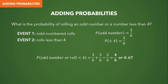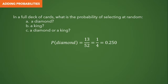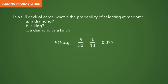Let's try this example. In a full deck of cards, what is the probability of selecting: A) a diamond, B) a king, C) a diamond or king? For letter A, the number of diamond cards is 13 (2 through 10 is 9, plus ace, king, queen, and jack = 13). With 52 cards total (not including jokers), the probability of selecting a diamond is 13/52 = 1/4 or 0.25. For letter B, since each of the four suits has a king, the probability of getting a king is 4/52 = 1/13, approximately 0.077.